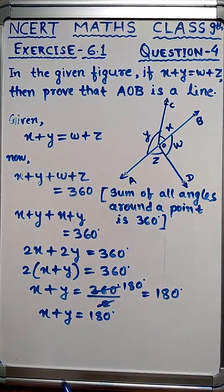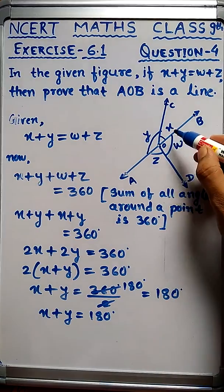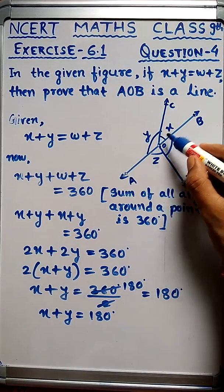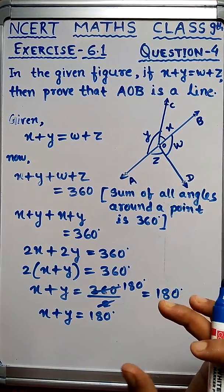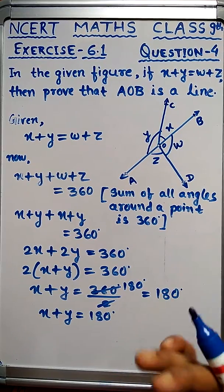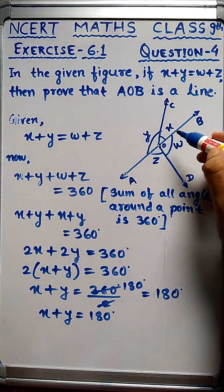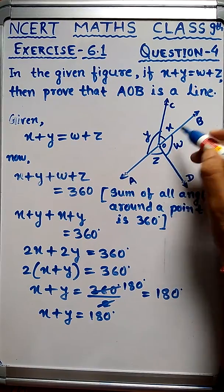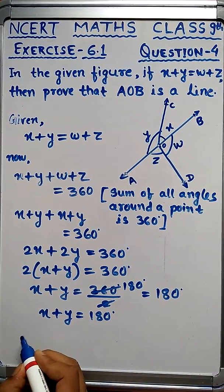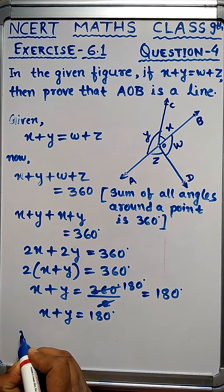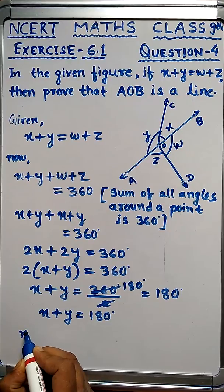So here we see that x plus y equals 180 degrees. When does this happen? When two angles form a linear pair on a straight line, their sum is 180 degrees.